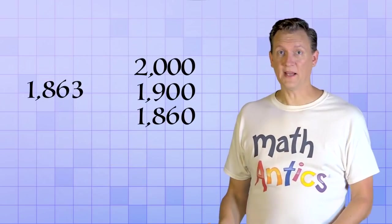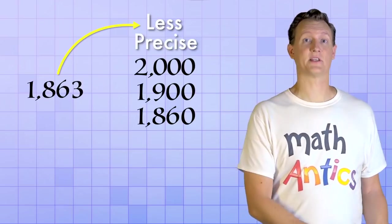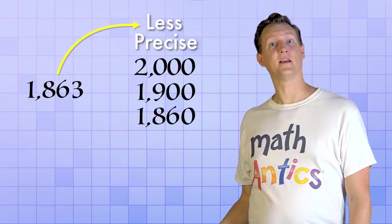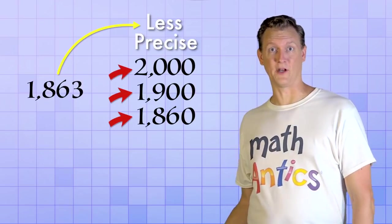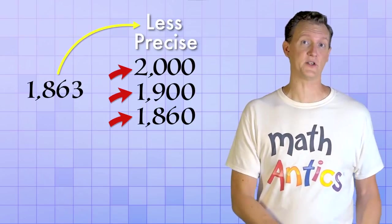So rounding a number basically means making a less precise version of it. And as you can see, there's usually multiple ways to round a number depending on the level of precision that you need.